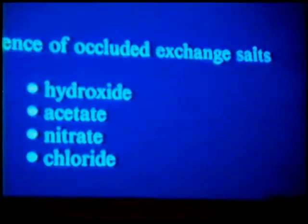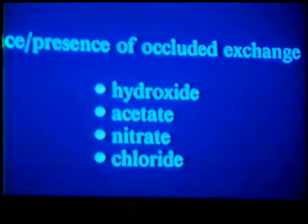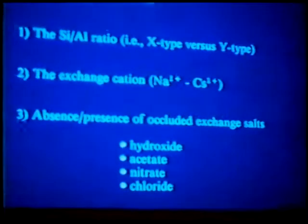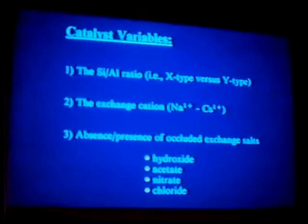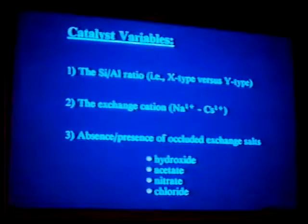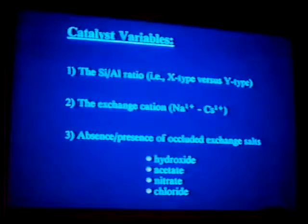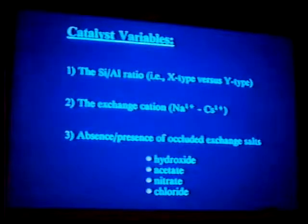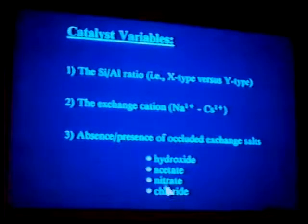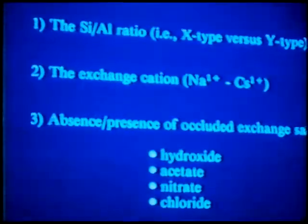As far as catalyst variables we considered in the earlier part of this work: firstly, the silicon-to-aluminum ratio — that is, the X-type faujasite versus the more siliceous Y-type. We also considered the exchange cation, the group 1A alkali metals, that is, sodium through cesium. Once we optimized the silicon-to-aluminum ratio with the cation, optimizing acetone selectivity and activity, we then looked at the absence and presence of the occluded exchange salt, taking the parent sodium form to the respective alkali form via alkali hydroxide, acetate, nitrate, or chloride solution, typically 0.1 normal.